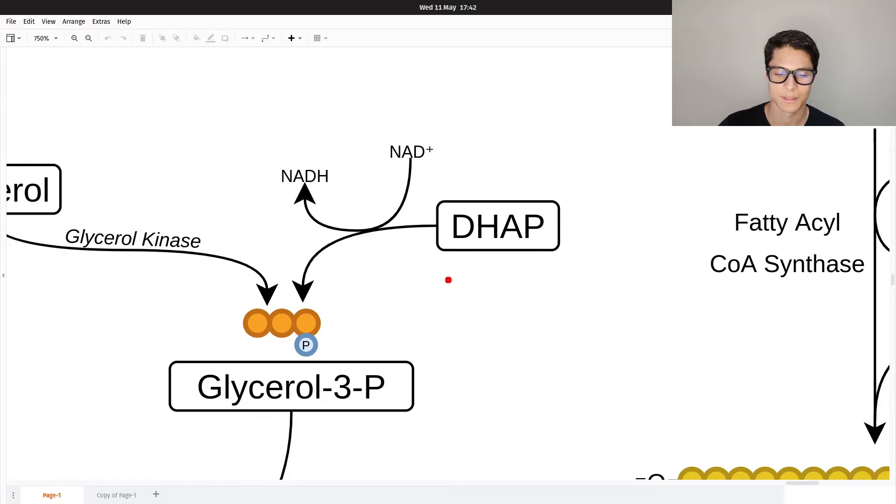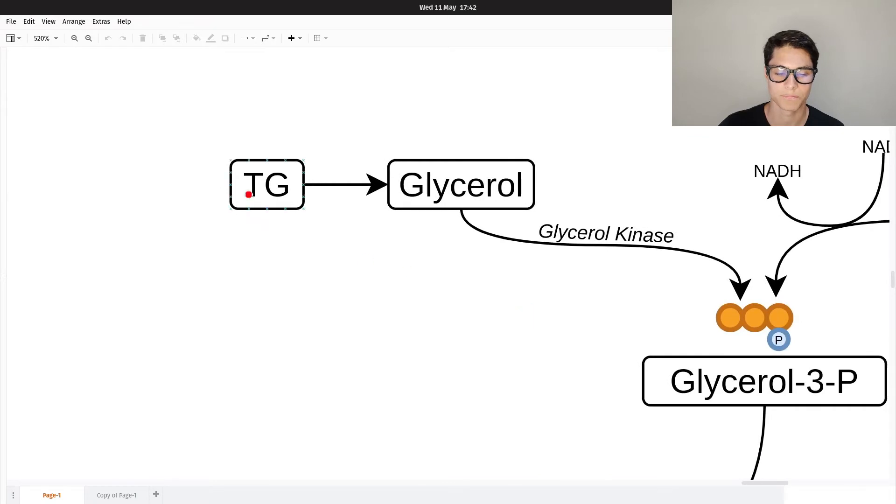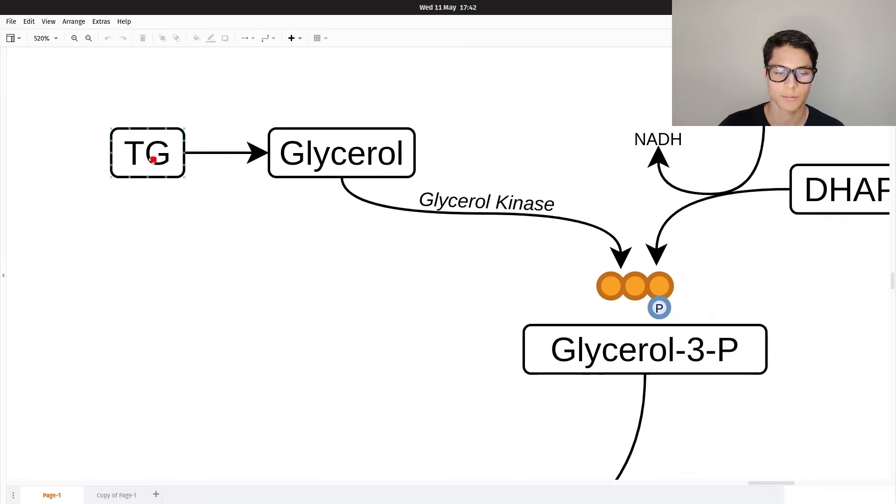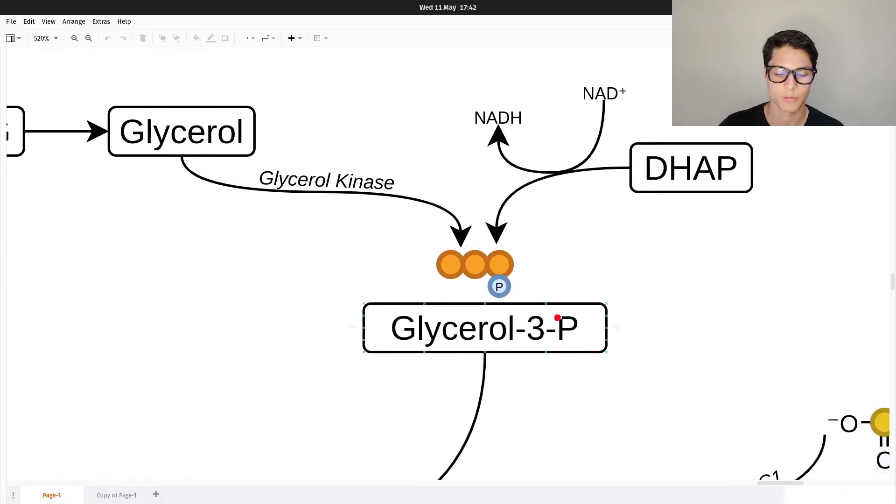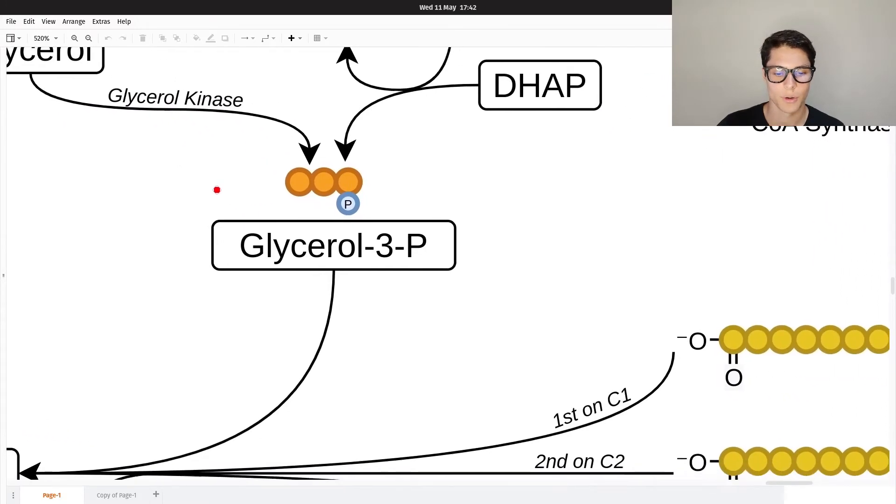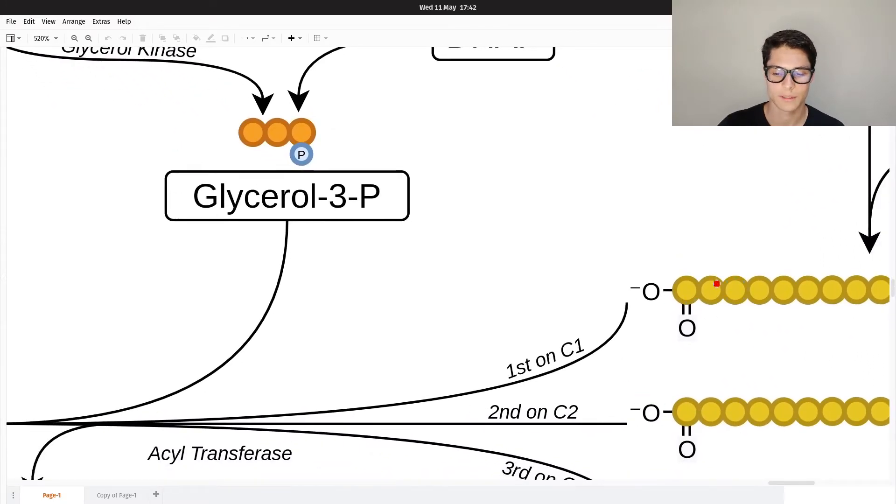Okay, so we get glycerol-3-phosphate. Another way is to have already existing triglycerides, break them down, and the glycerol can be converted into glycerol-3-phosphate via glycerol kinase. So we need the free fatty acids with the CoA and the glycerol-3-phosphate.